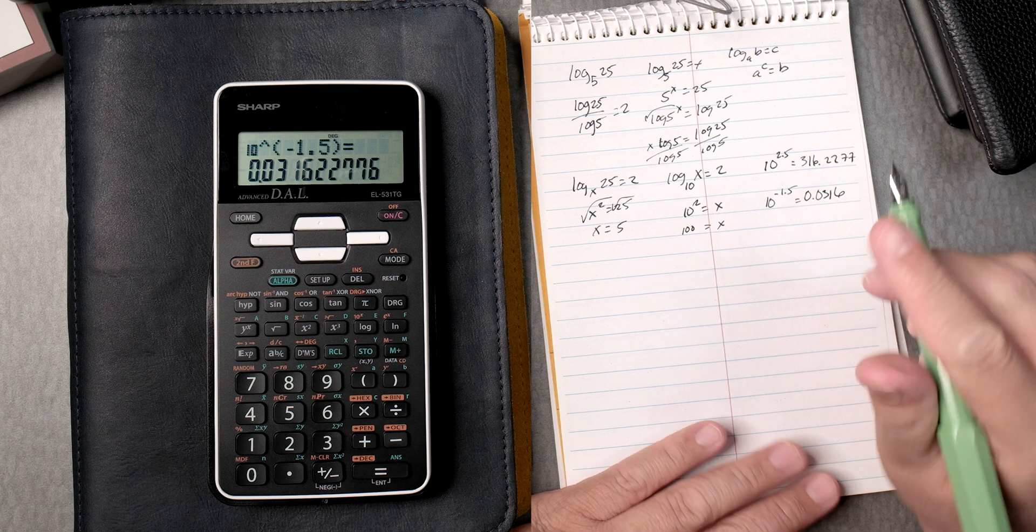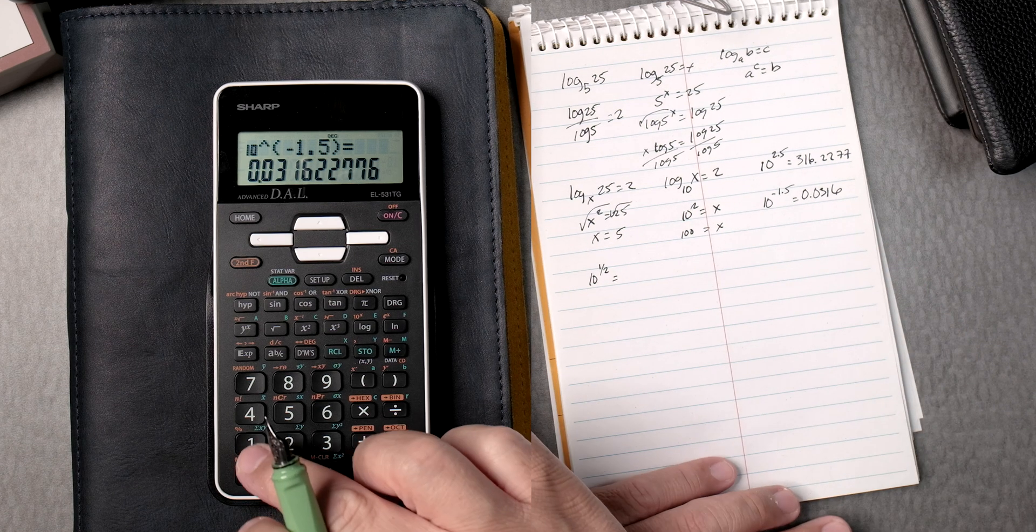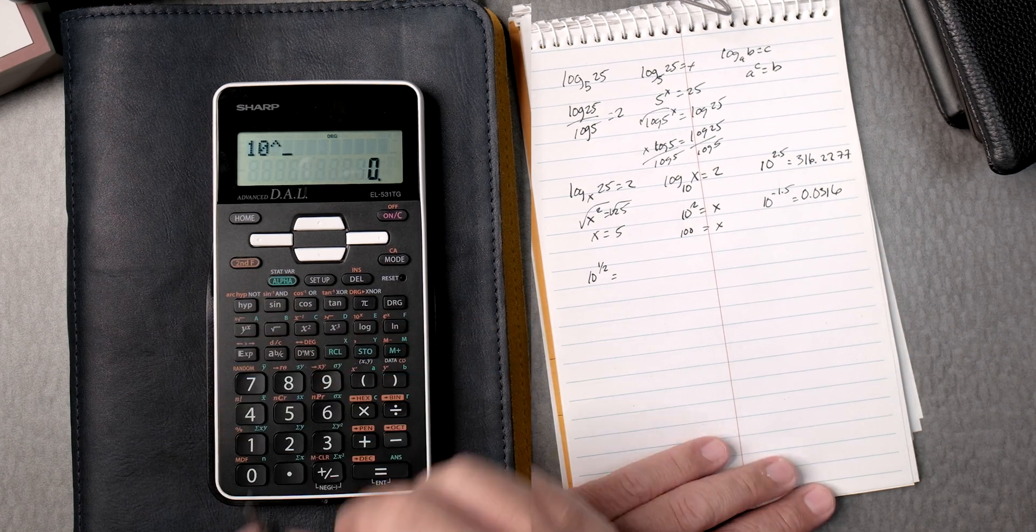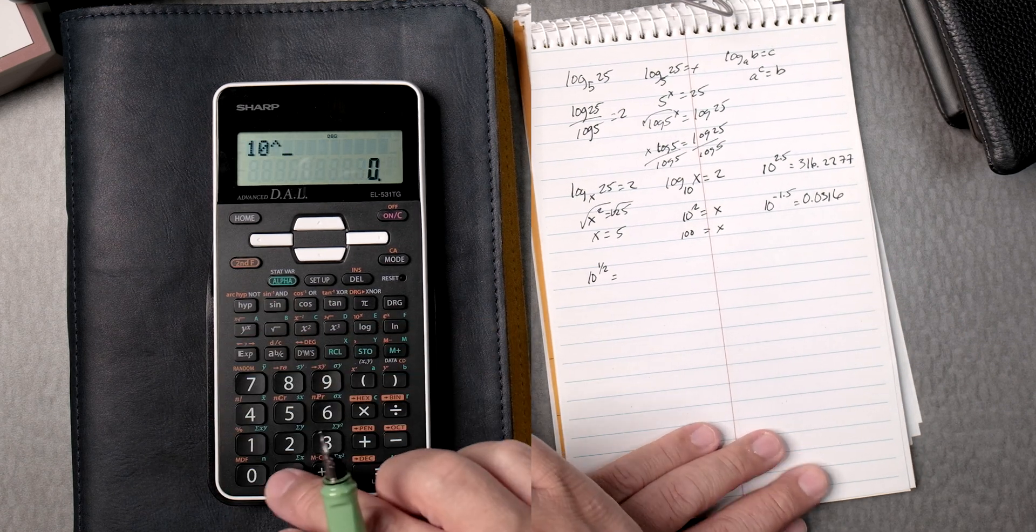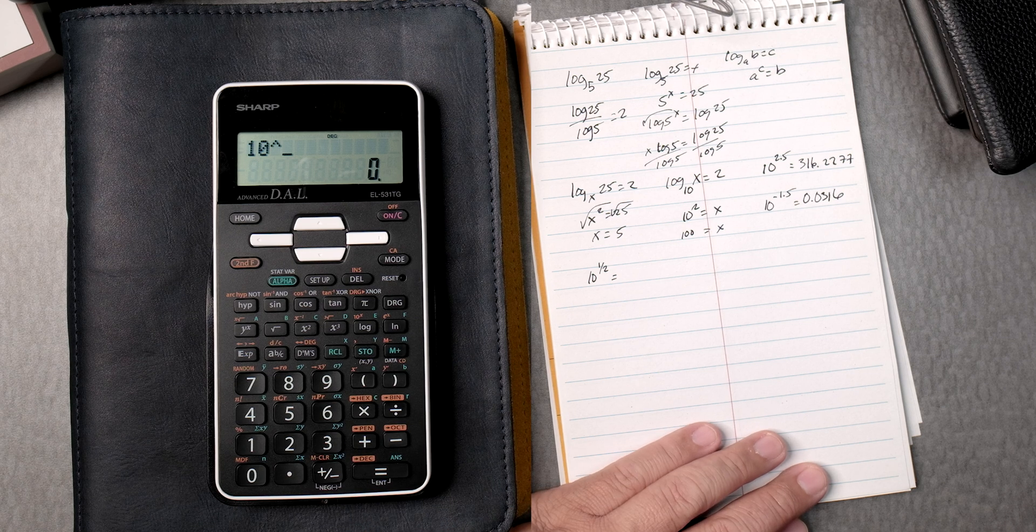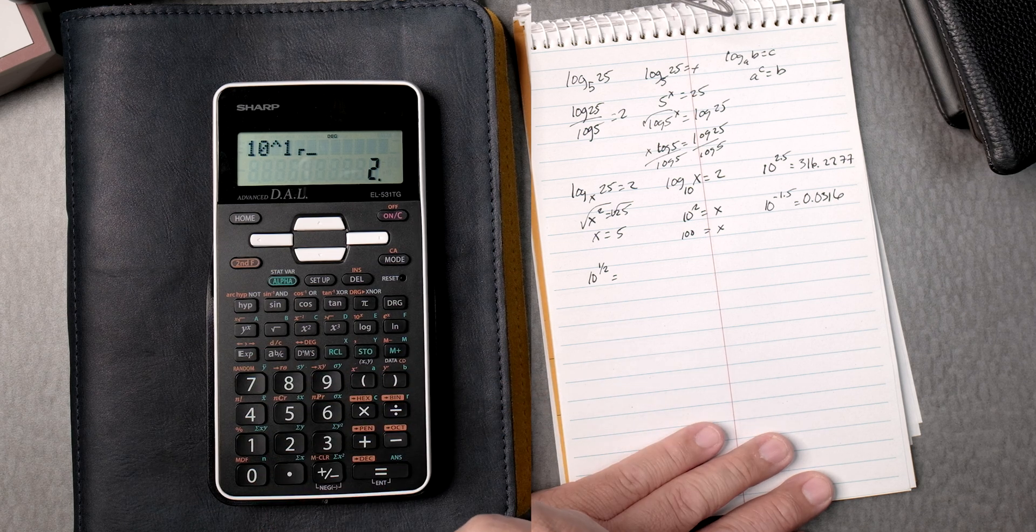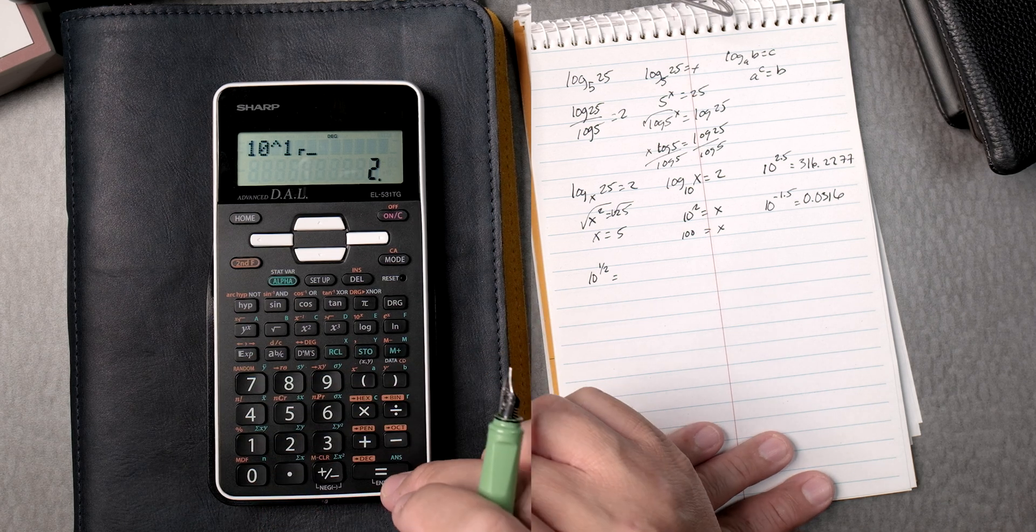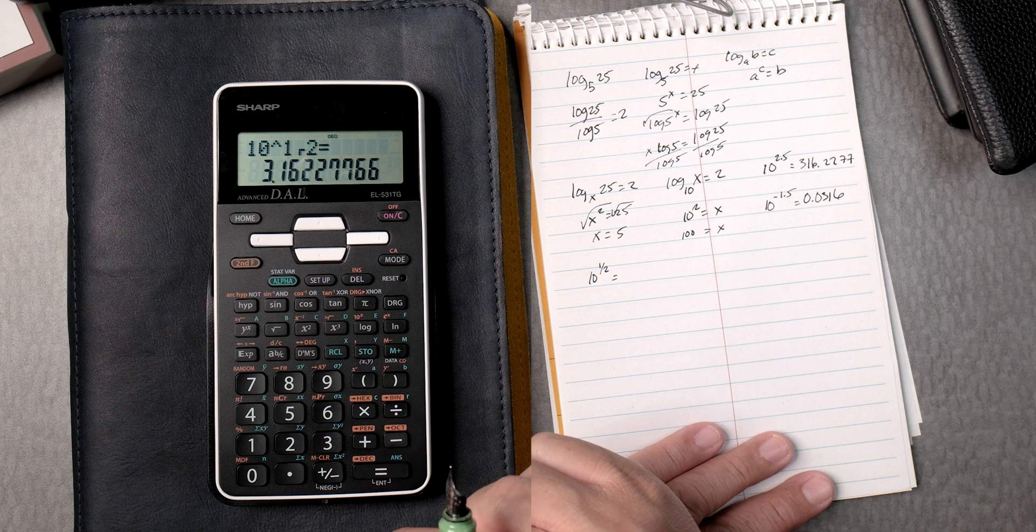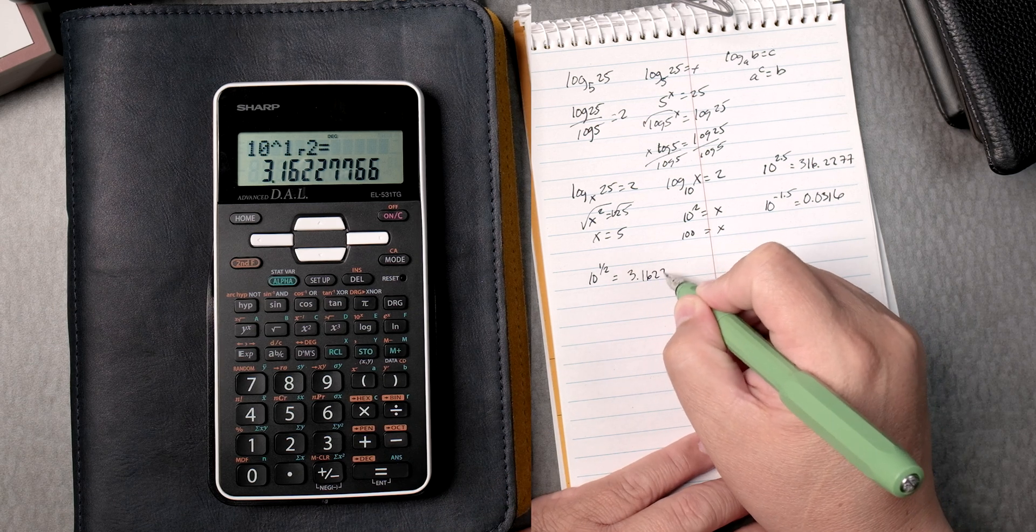Negative 0.0316. Now what about 10 to the 1 half? So we can say 10, y to the x, and here, I'm trying to remember, yes it does, it has 1, abc, 2. So that's going to be your fraction. And here, you get 3.16227.